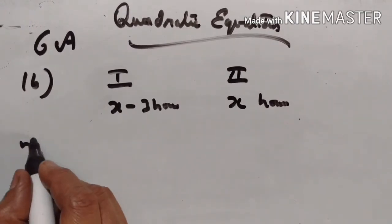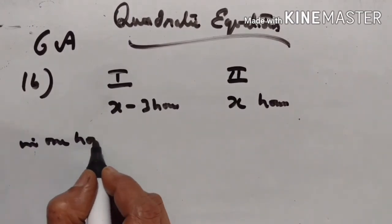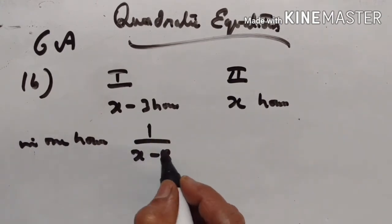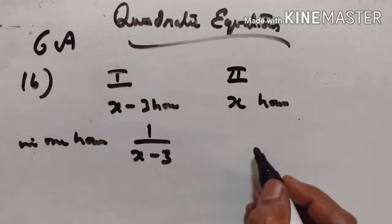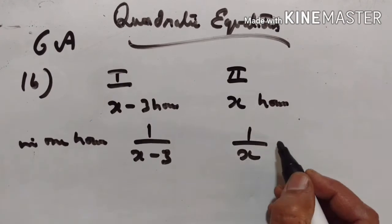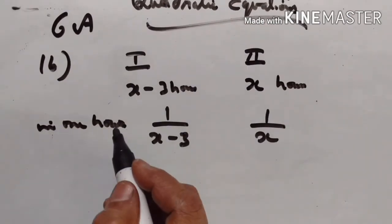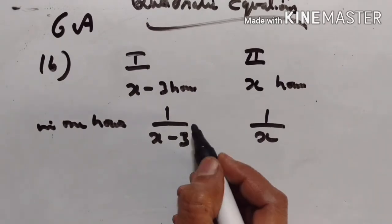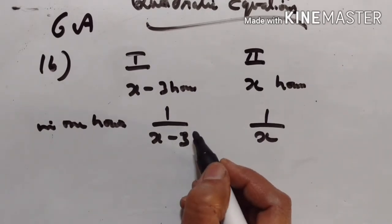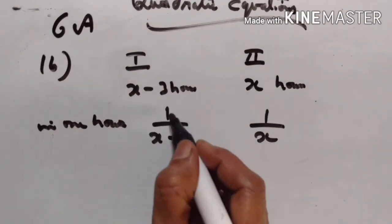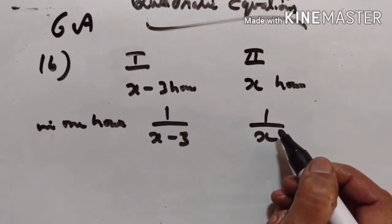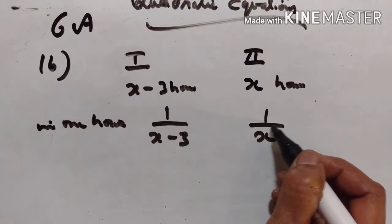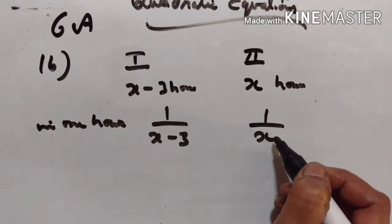In one hour, the first pipe fills one upon x minus three of the cistern, and the second pipe fills one upon x of the cistern. So the part of the cistern filled by the first pipe in one hour is one upon x minus three, and by the second pipe is one upon x.